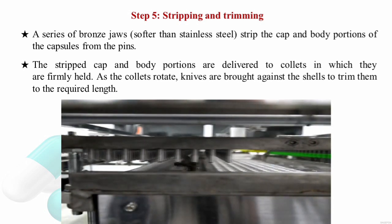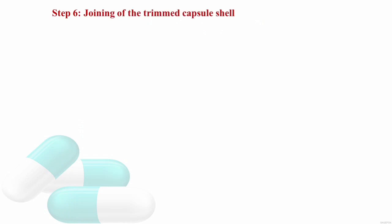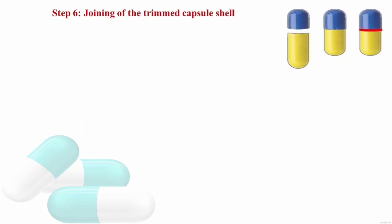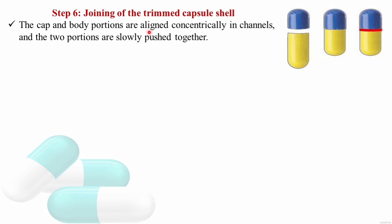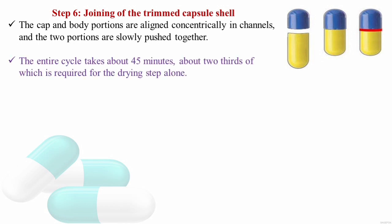Step 6: Joining of the capsule shells. The trimmed cap and body portions are aligned concentrically in channels and pushed together to form an interlock so that the medicament cannot come out. This entire cycle of capsule formation takes about 45 minutes, with two-thirds of the time required for the drying step alone.